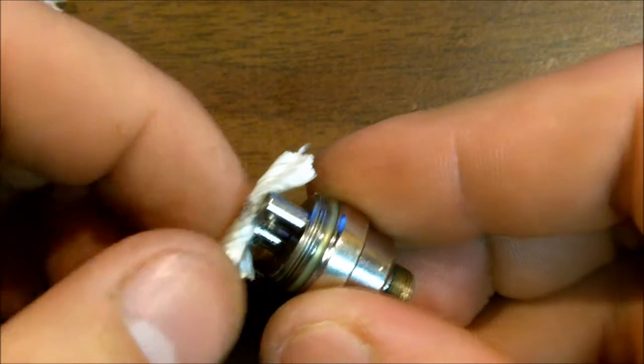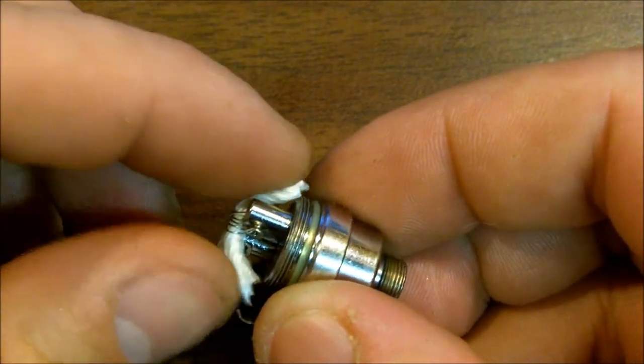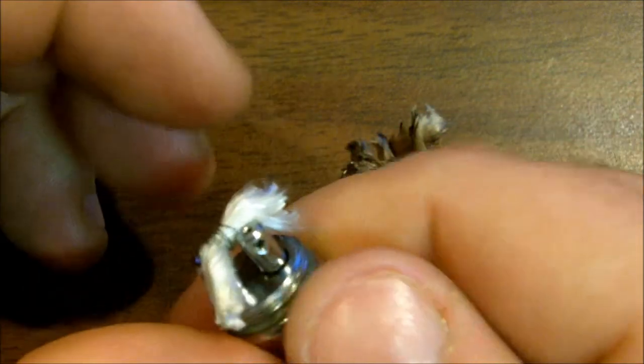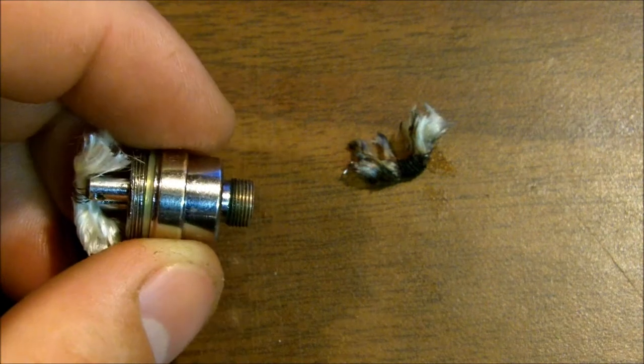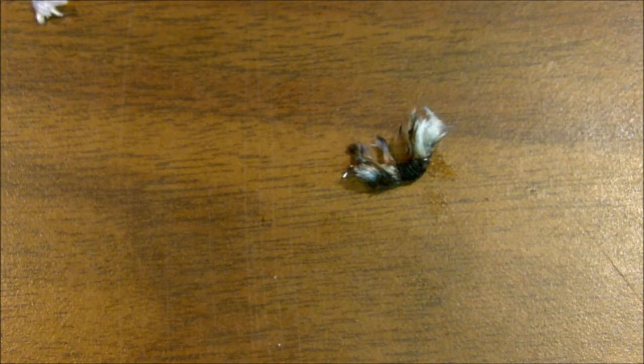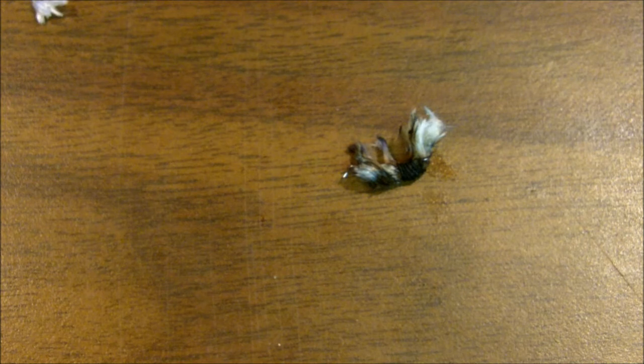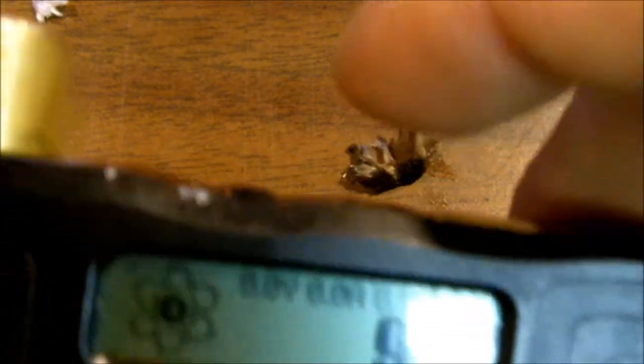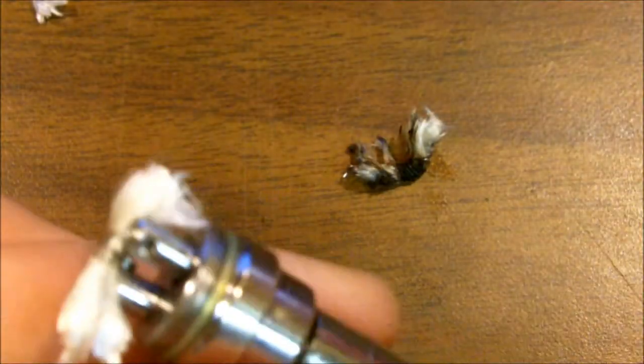Oh whoops, that went off camera. Sorry guys. So that'll sit in there nice. Of course, you know, what's the ohm-age of it? Only one way to find out. Screw it onto a Darwin or onto a VAMO or onto something that has voltage readout. And 1.7, 1.7 is usable. There we go.